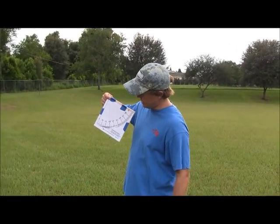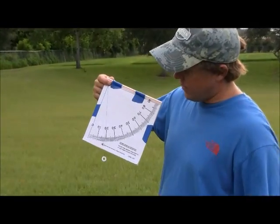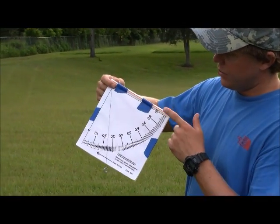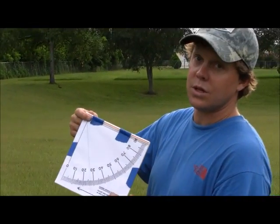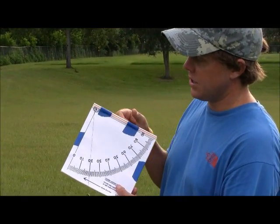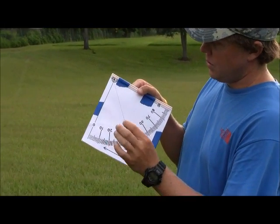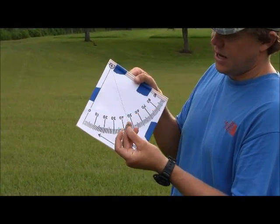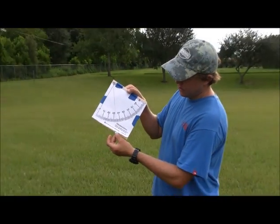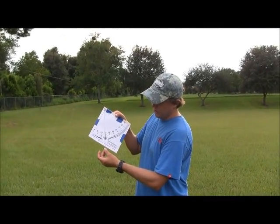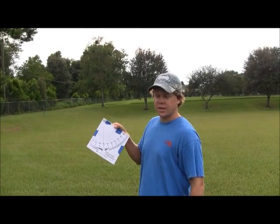Basically, what a clinometer is, is it has a range of 90 degrees on it. We have used a straw to sight through. We are going to look through that straw to find the top of the tree. Then we have a simple piece of thread and a washer, which will give us a degree on this that we can use in our formula, which we will explain later.